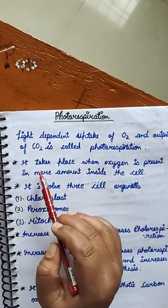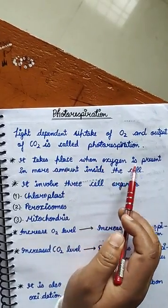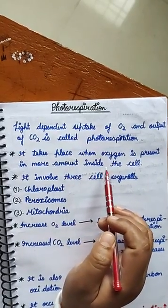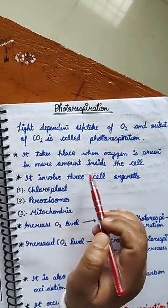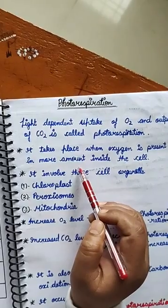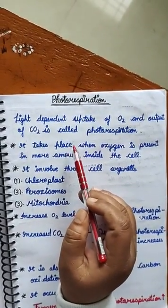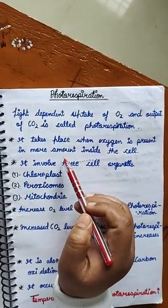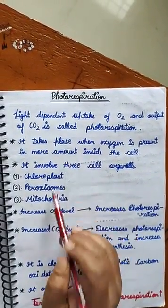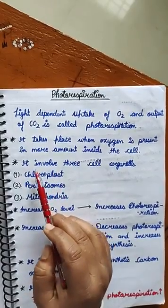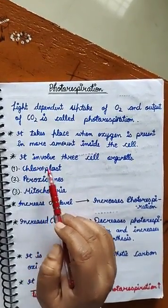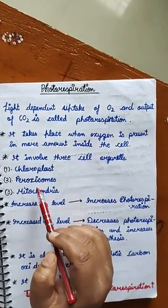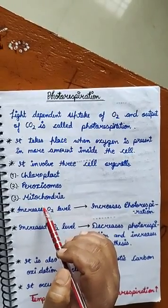This process takes place when oxygen is present in more amount inside the cell. In this process, three cell organelles are involved: chloroplast, peroxisome, and mitochondria.